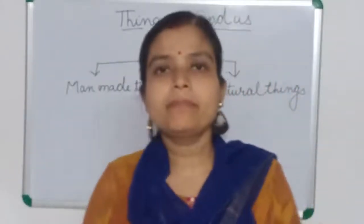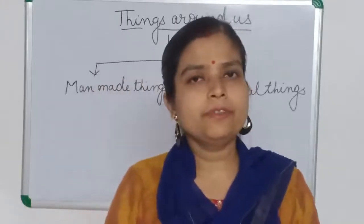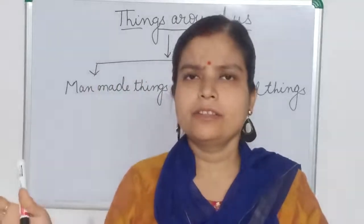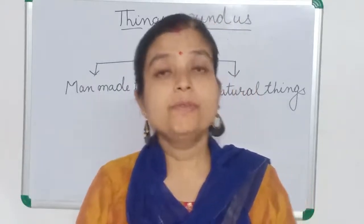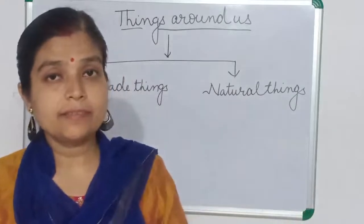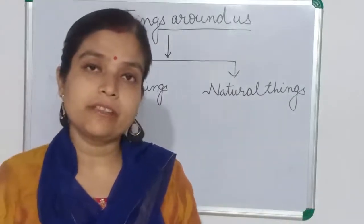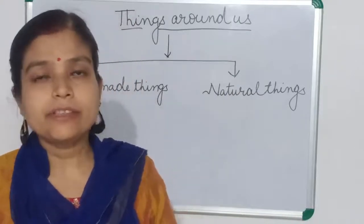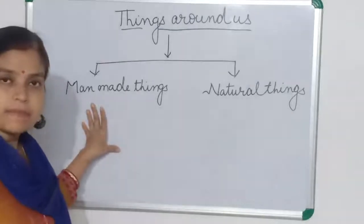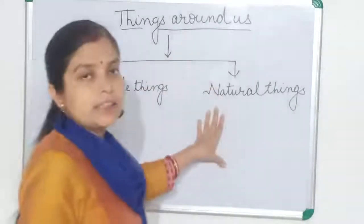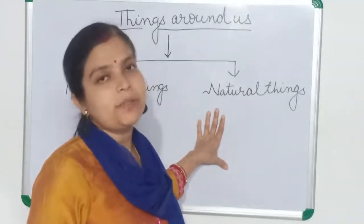Things which are made by man are known as man-made things. To solve our problems we invent many things, so those are known as man-made things. For example, the car — some person has made the car. Who made the washing machine? Some person has made it. So these are man-made things. Things made by man are man-made things, and things created by or gotten from nature are natural things.